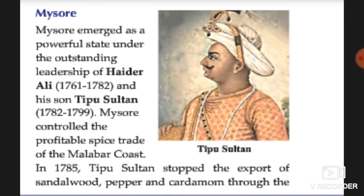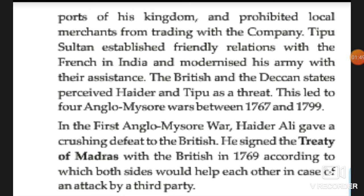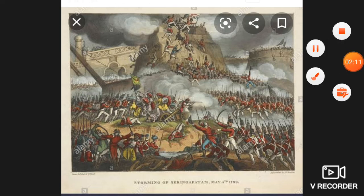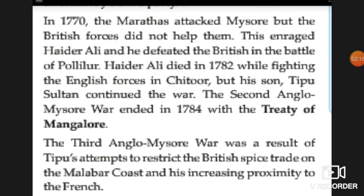This led to four Anglo-Mysore wars between 1767 and 1799. In the first Anglo-Mysore war, the British made a treaty but did not protect Hyder Ali when the Marathas attacked. Hyder Ali was very upset. In 1782, Hyder Ali died while fighting English forces in Chittur, but his son Tipu Sultan continued the war. The second Anglo-Mysore war ended with the Treaty of Mangalore.